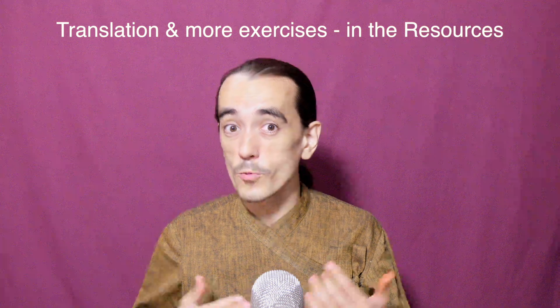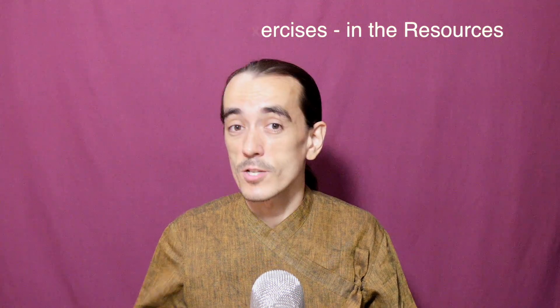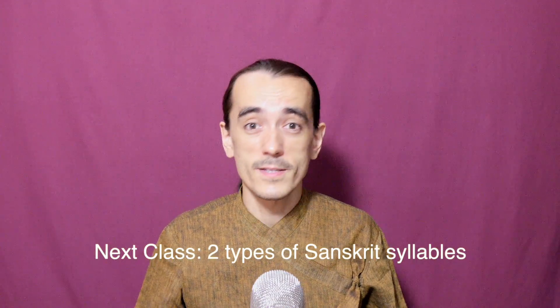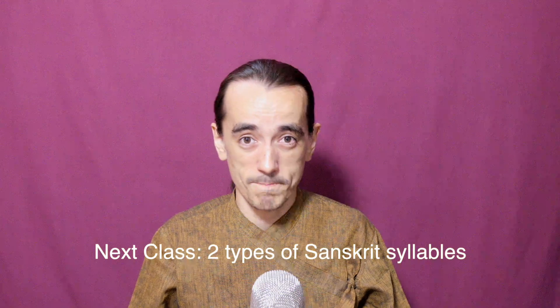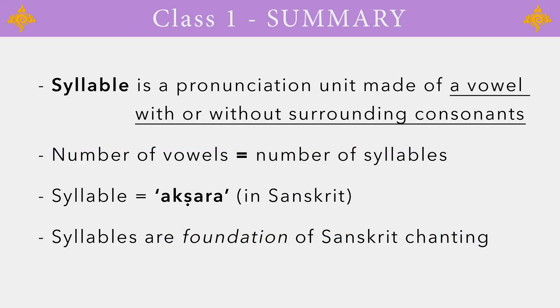The translation of the verse is attached in the resources to this lecture. If you like, you can do more of this syllable counting exercise — just download it from the resources. Now it's the time for us to learn and practice the two types of syllables in Sanskrit — we'll get to that right in the next class. To summarize: a syllable is a pronunciation unit made of a vowel with or without surrounding consonants; the number of vowels equals the number of syllables; syllable is called akshara in Sanskrit; and syllables are the foundation of Sanskrit chanting.